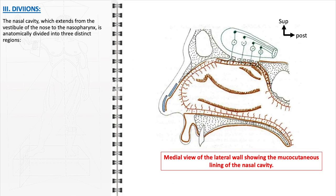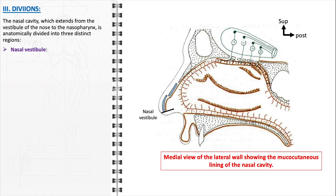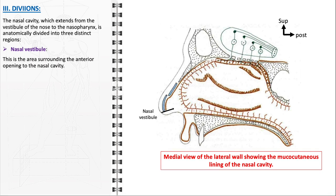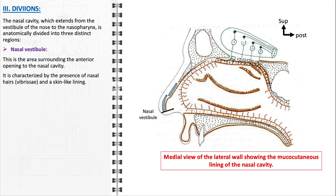The nasal cavity, which extends from the vestibule of the nose to the nasopharynx, is anatomically divided into three distinct regions, each with unique features and functions. The vestibule is the area surrounding the anterior opening to the nasal cavity, functioning as the initial segment of the nasal passage. It is characterized by the presence of nasal hairs, vibrissae, and a skin-like lining. The vibrissae are crucial for filtering larger particles like dust and debris from the air entering the nasal cavity, serving as the first line of defense in the respiratory system.